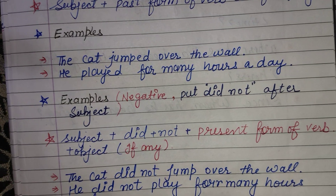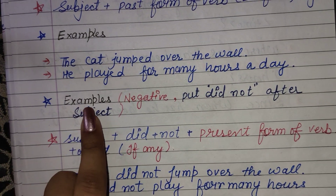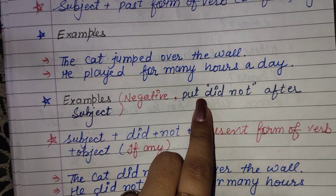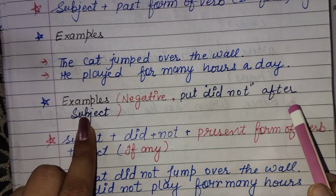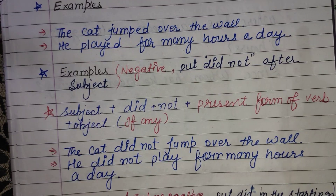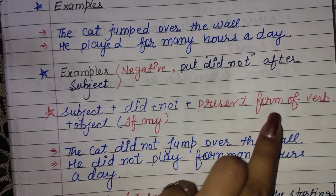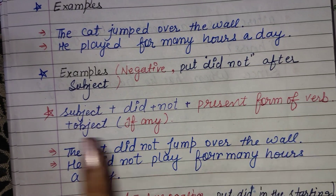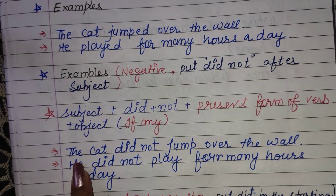Now for negative sentences. In negative sentences, after your subject you add 'did not' followed by the present form of the verb, then the object if any. The sentence formation is: Subject + did not + present form of verb + object.